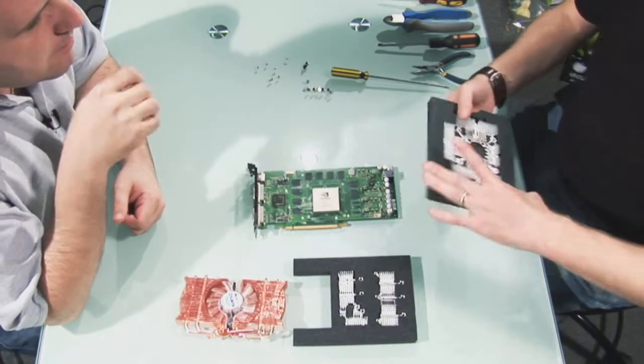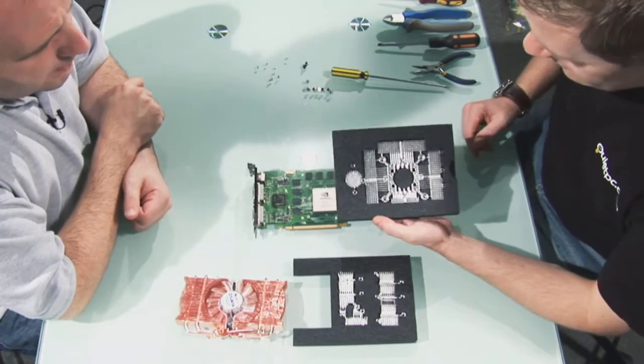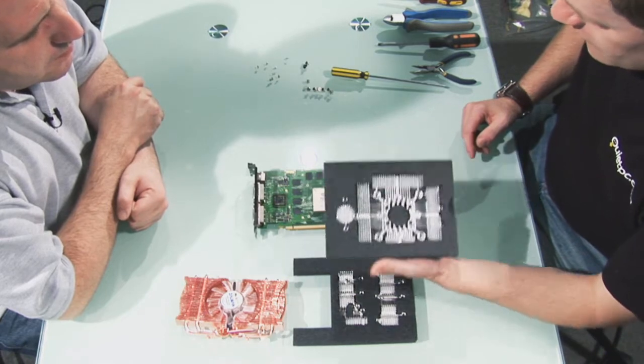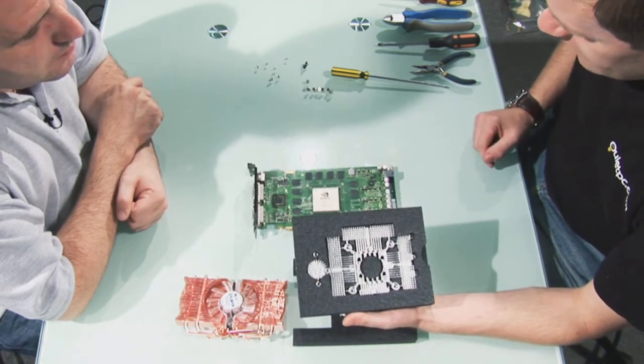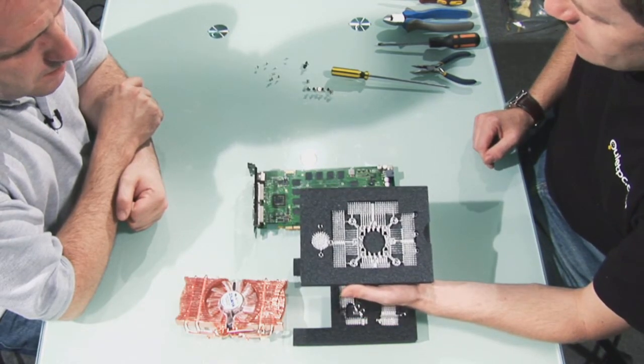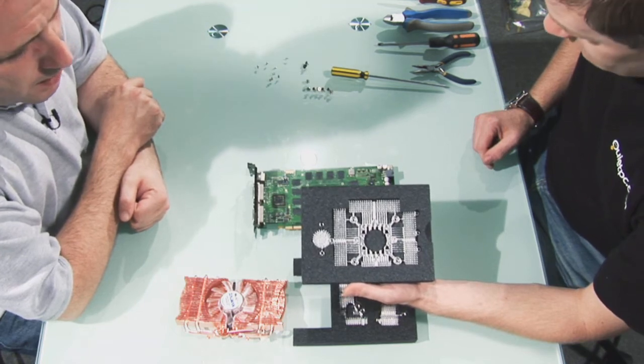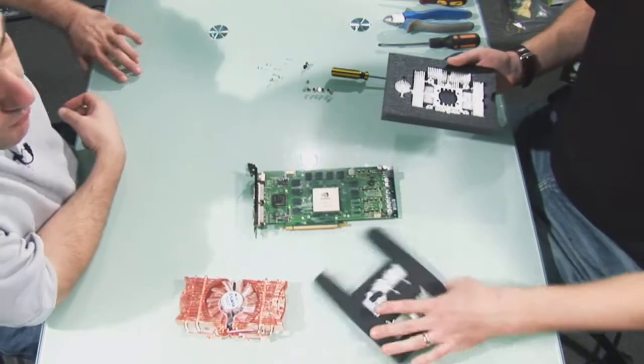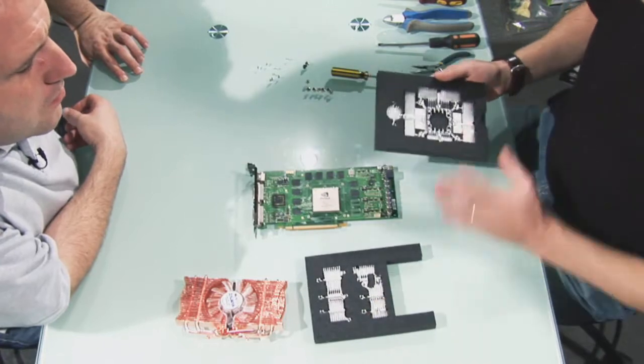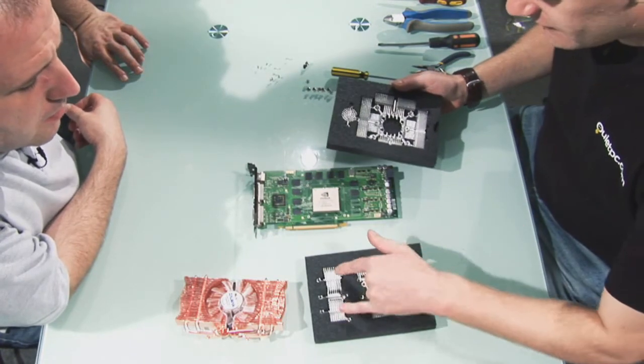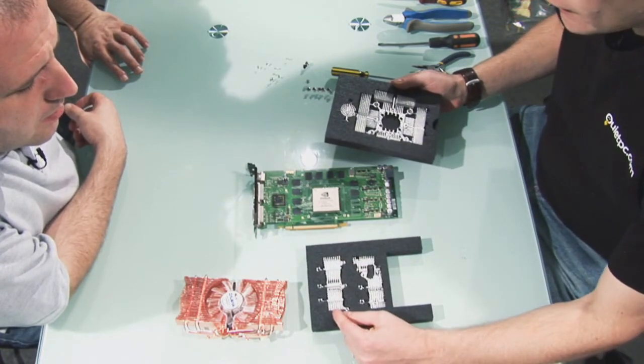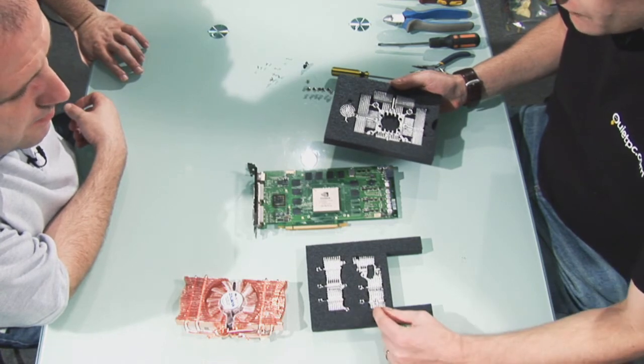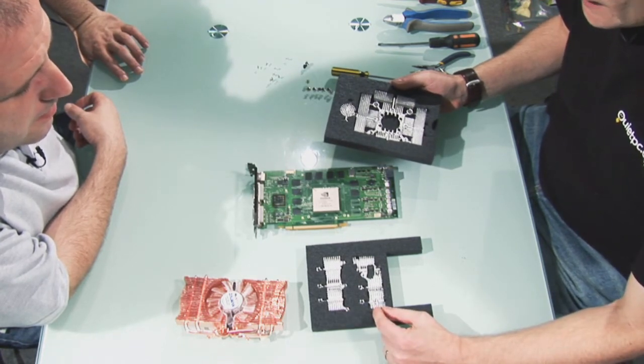This is a Zalman ZM RHS 88. This is actually designed to cool the RAM and also the FET cards on the 8800 GTS and also GTX. It comes in two parts, or three parts. Well, basically you would only use two of these parts. So this section here is for the 8800 GTX, whereas this one is for the 8800 GTS.